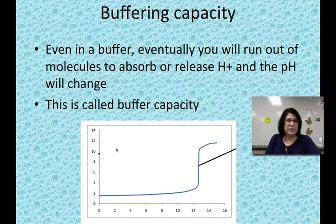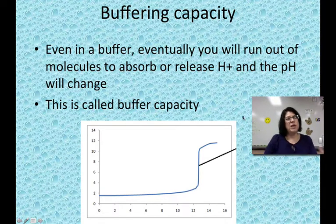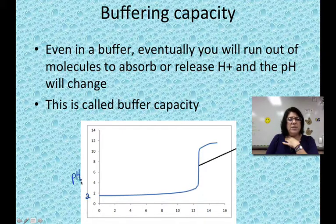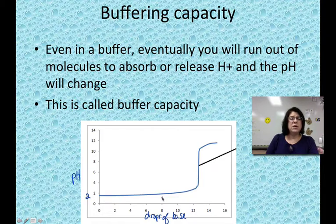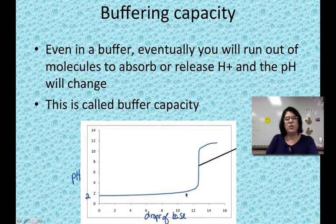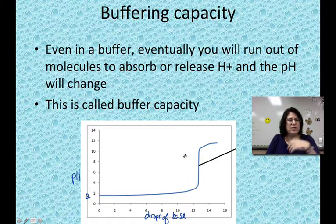Buffers are great, but they don't work forever. Even in a buffer, eventually you will run out of molecules to absorb or release hydrogen ions and the pH will eventually change — this is called the buffering capacity. The graph shows that if a solution has a pH of around 2 and you add drops of base, the buffer handles it by releasing extra hydrogens and maintaining the pH at the needed level. Eventually, it won't be able to release any more hydrogens — it'll run out. Once the buffer runs out, the pH will suddenly change. Even though we're lucky to have buffers in our body, they can't do it forever, and our pHs can get out of whack with serious consequences.